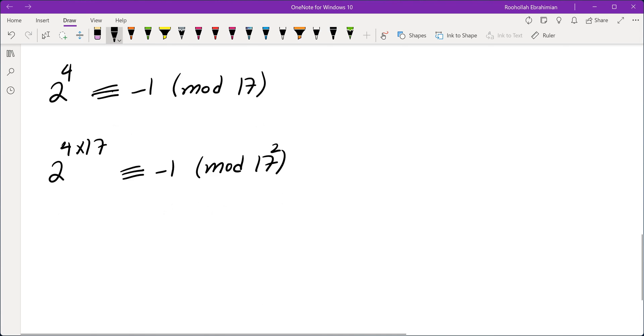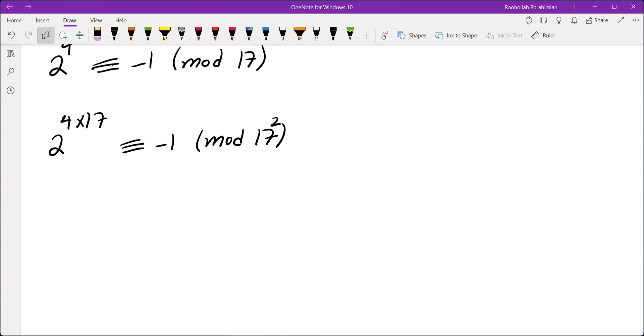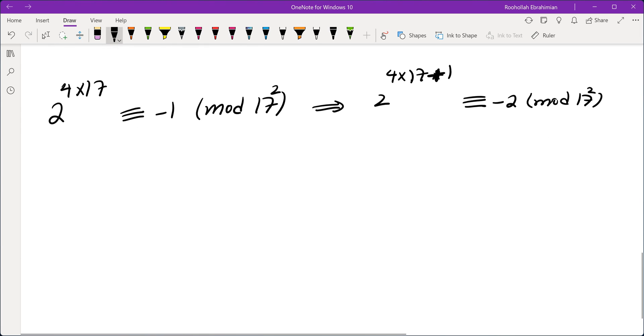Okay, so what does that mean? It means if I multiply this by 2, so I would get 2 to the power of 4 times 17 plus 1. That is negative 2 mod 17 squared. Okay, now that's obviously not the only power of 2 that gives us negative 2. We can also create other powers that give us negative 2. So really, what is the bottom line here?